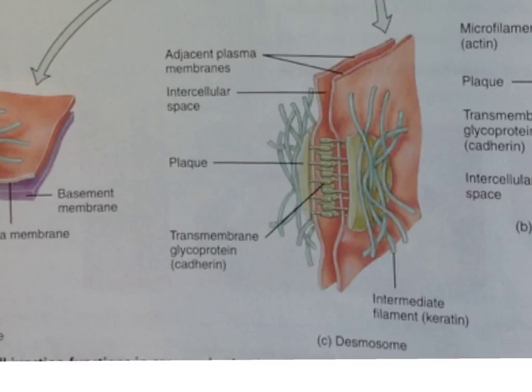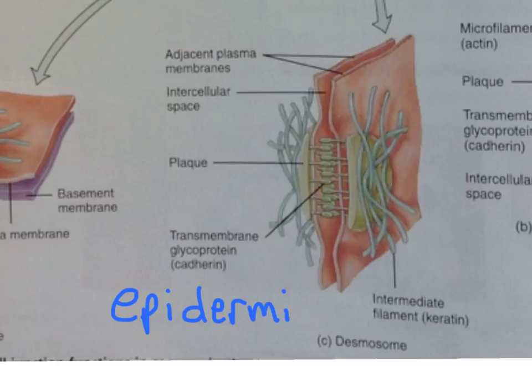The desmosomes act as strong structural reinforcements of the cell membrane at specific points of stress and tension, helping to maintain overall tissue stability. They are common in the outer epidermis of the skin, helping to resist the physical forces that the skin is constantly exposed to.